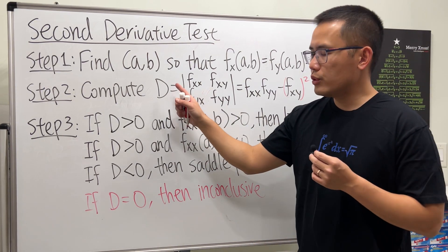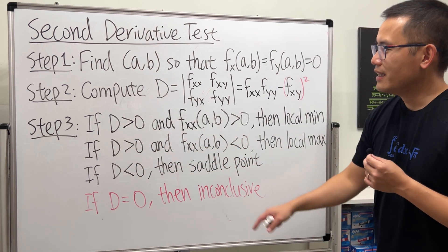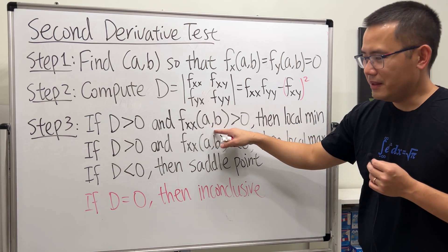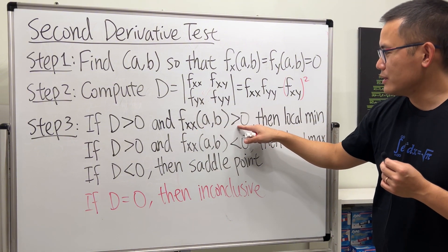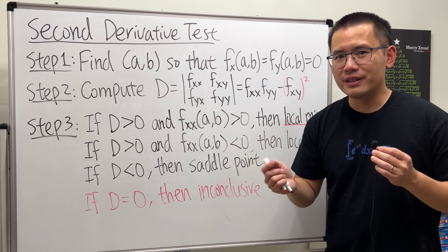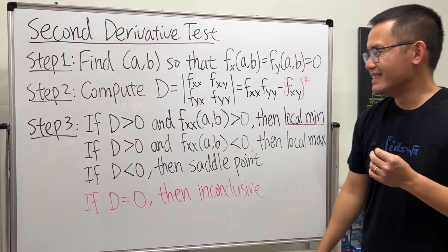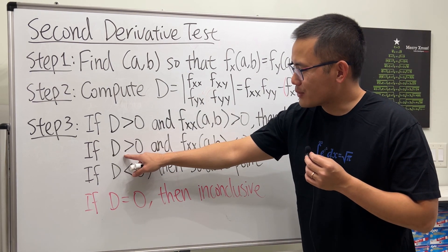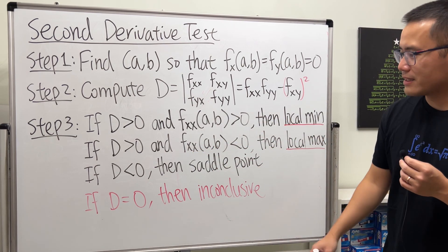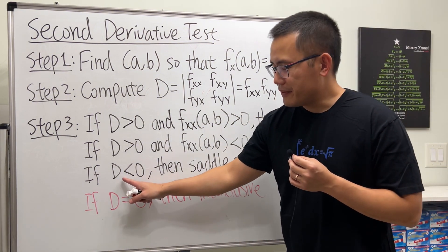If the D value is greater than zero, we need to do more work: compute the second derivative f_xx at (a, b). If f_xx is greater than zero, we get a local minimum — just like in Calc 1 where a concave-up function has a local min. If D > 0 and f_xx < 0, we get a local maximum.